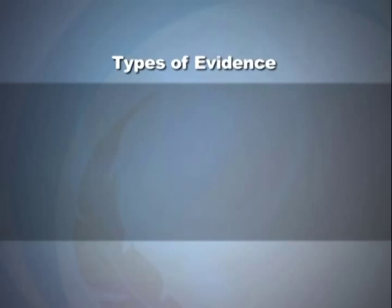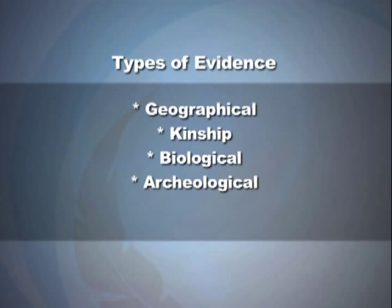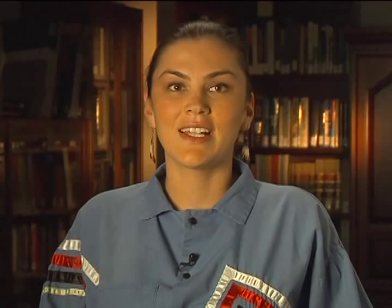The types of evidence that can be used to come to a determination of cultural affiliation include geographical, kinship, biological, archaeological, linguistic, folklore, oral tradition, historical evidence, or other information or expert opinion. They are not in priority order and have equal weight, although not all may apply depending on the facts available in consultation with tribes. Most of this information will be used in the Notice of Inventory Completion. The more complete the information in your inventory, the easier and faster it will be to create the notice.